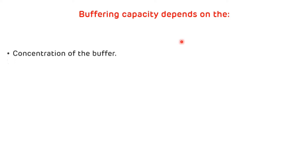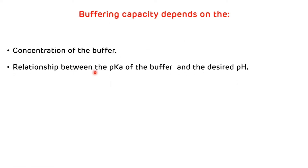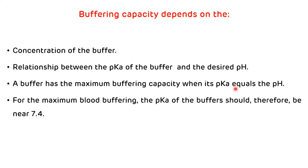The buffering capacity of a buffer depends on the concentration of the buffer. The pKa is defined as the pH at which the buffer exists in equal proportion with its acid and conjugate base. Maximum buffering capacity is achieved when pH equals the pKa. For maximum blood buffering, the pKa of the buffer should be around 7.4, which is the physiological pH of blood.